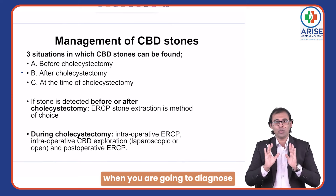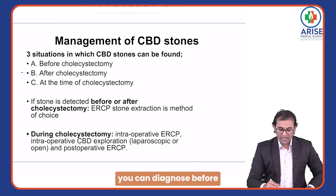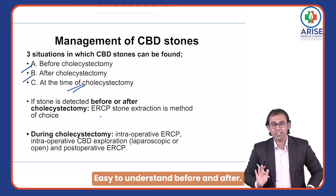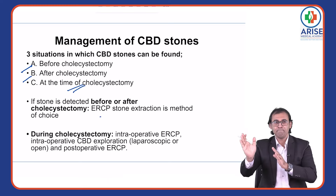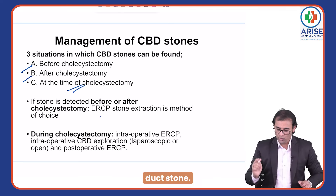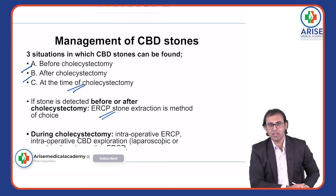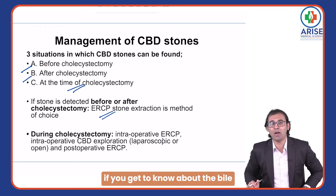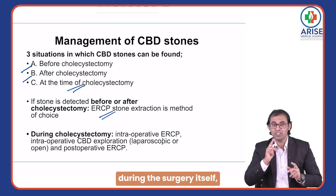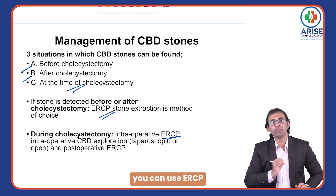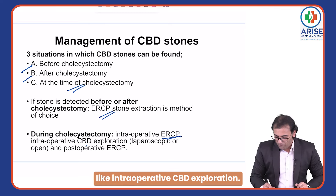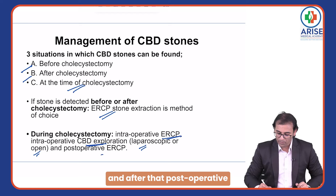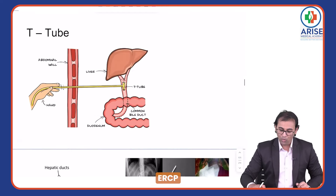CBD stones can be diagnosed before, during, or after cholecystectomy. If diagnosed before or after surgery, ERCP stone extraction is the preferred answer. If discovered during surgery, you can use ERCP or perform intraoperative CBD exploration using laparoscopic or open surgery. Post-operative ERCP can also be used after surgery.